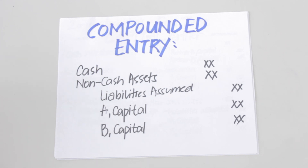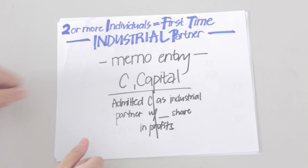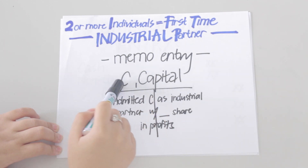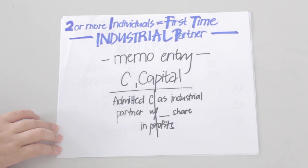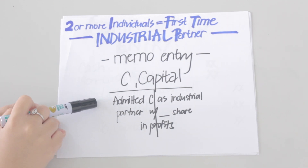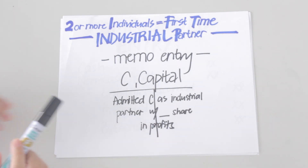Again, all entries discussed are for capital partners. A different approach is taken when it involves industrial partners. For industrial partners, we no longer make a journal entry; instead, we simply make a memo entry. You draw a T-account for the partner's capital and write a memo indicating the partner is admitted as an industrial partner with their share in profits.